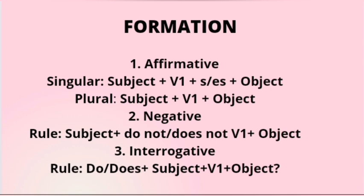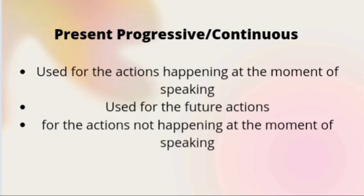If the sentence is negative, it begins with the subject, then do not or does not, first form of the verb, and object. With plural subjects you use 'do not' and with singular you use 'does not.' In case of an interrogative sentence, your sentence will begin with do or does, plus subject, first form of the verb, and object.